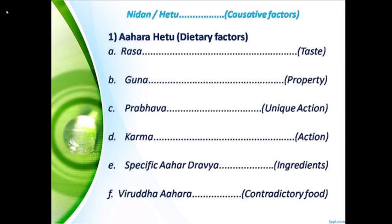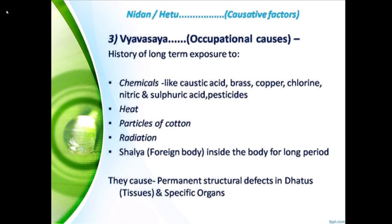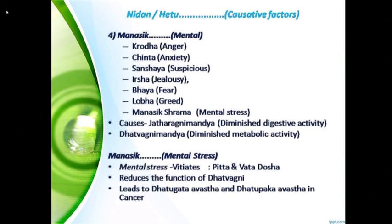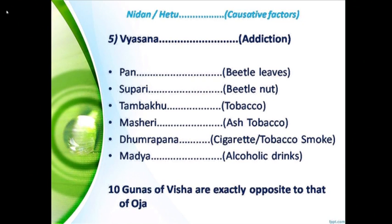Regarding causative factors — ahara, dietary factors, are the main cause. Second are behavioural factors, for example, withholding natural urges. Then vyasana — occupational causes due to chemicals, heat, radiation, and similar exposures. Manasik causes include krodha (anger), chinta, and mental stress. Addiction is well known — we all know tobacco causes cancer. In India, particularly in rural areas, most of the population tends to use tobacco, so the main cancers we see are CA throat, CA mouth, and CA tongue.